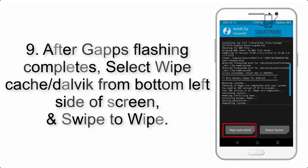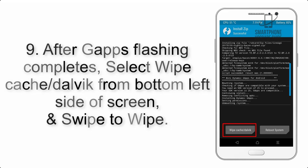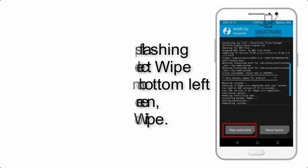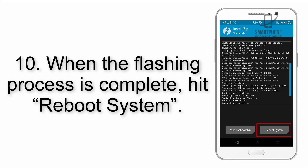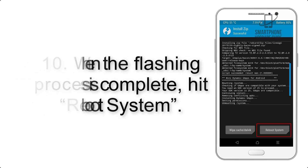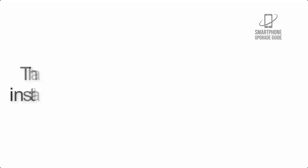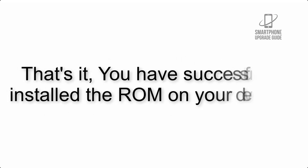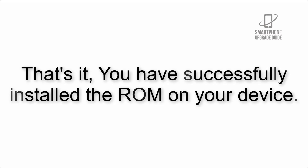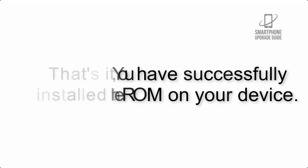Step 9: After GApps flashing completes, select Wipe Cache and Dalvik from the bottom left side of the screen and swipe to wipe. Step 10: When the flashing process is complete, hit Reboot System. That's it — you have successfully installed the ROM on your device.